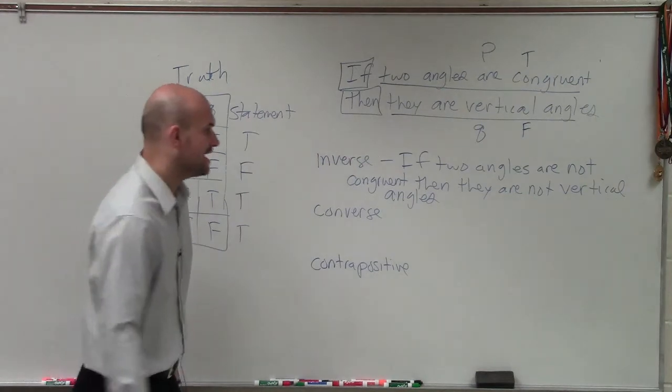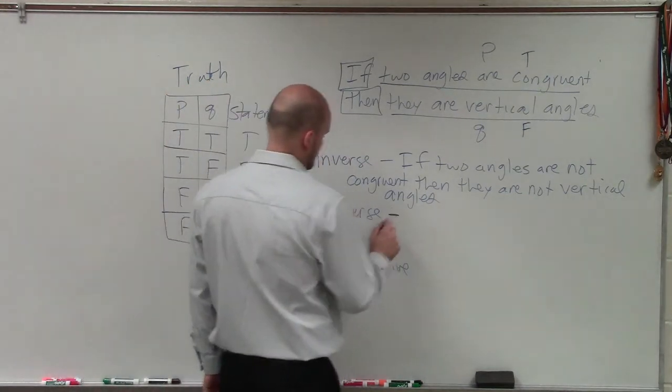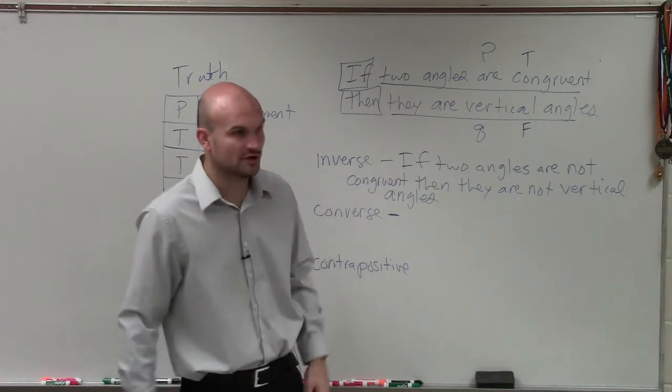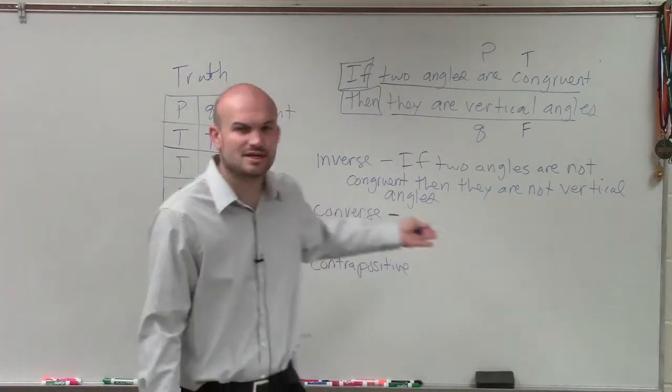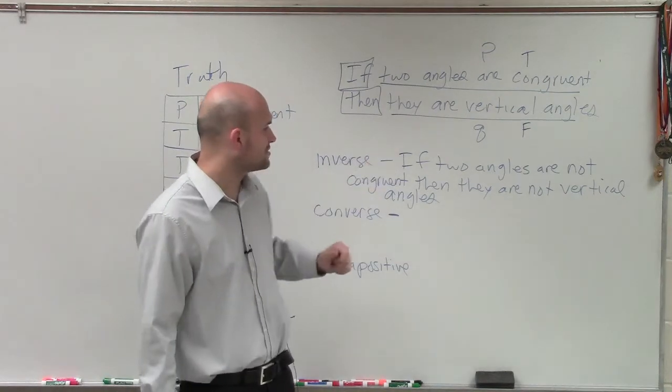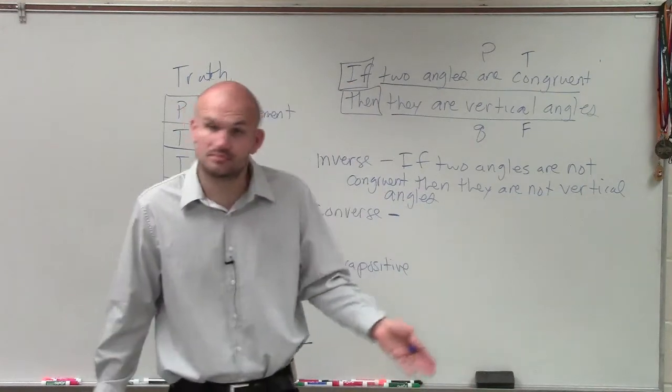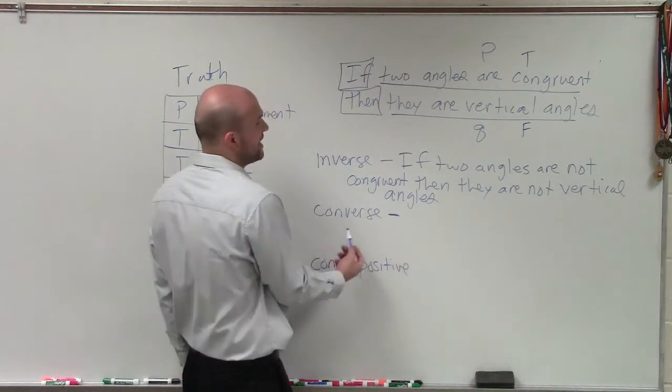Then let's look at the converse. So if two angles are not congruent, then they are not vertical angles. And that's what I'm trying to say. Is it possible to have two angles that are not congruent, then they are not vertical angles? Well, if you look at that, then you can go with converse.